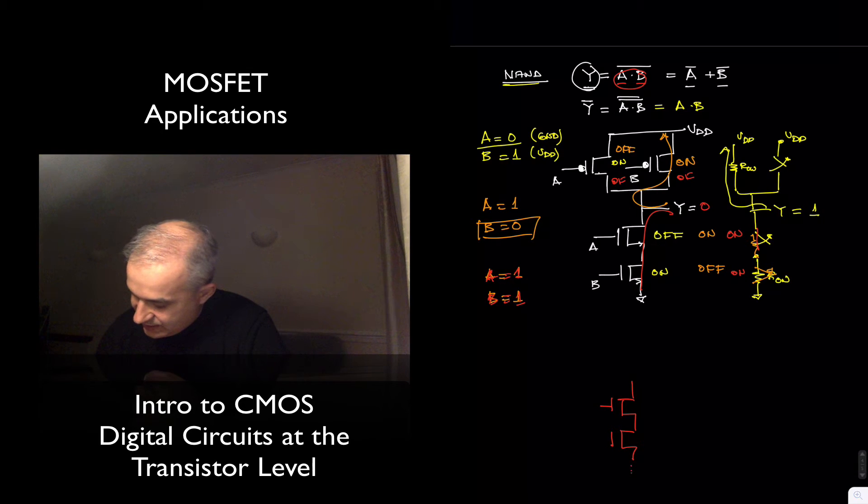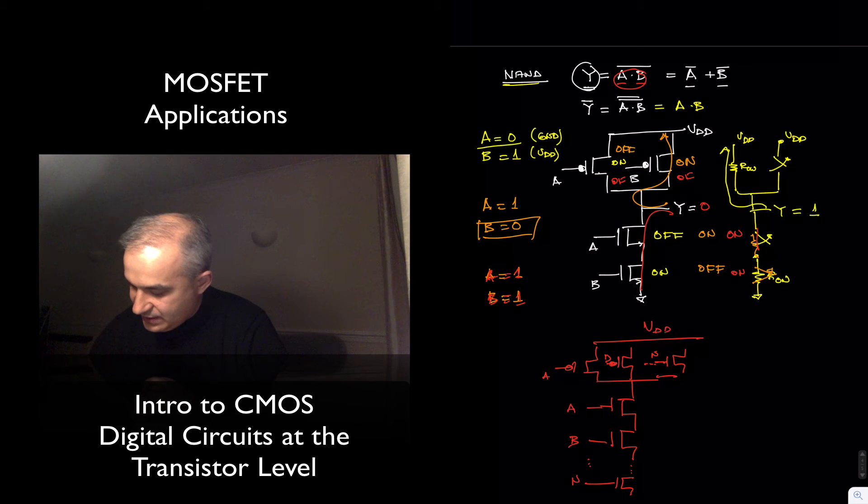For any, as many inputs as you want, A, B, N inputs. Once you connect all these A together and B together, as a VDD, this is the output.